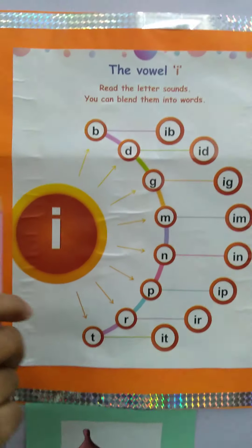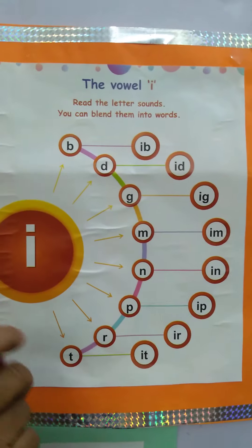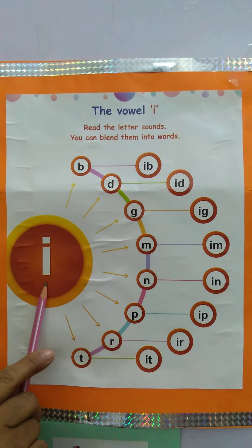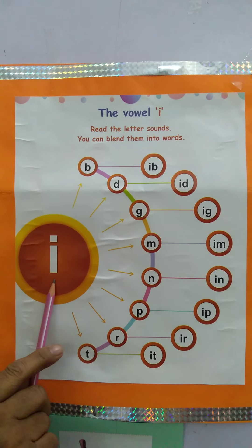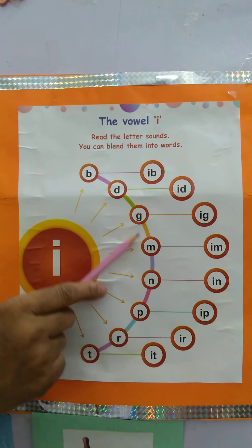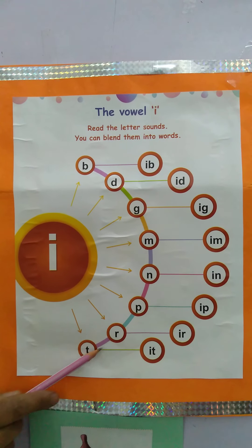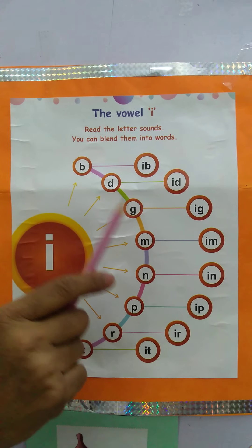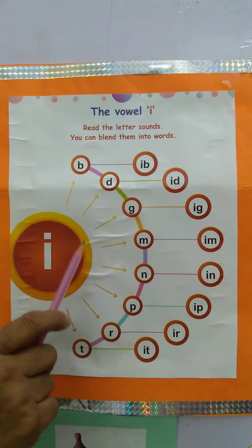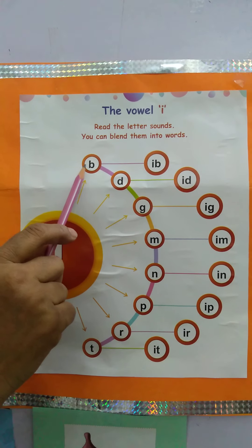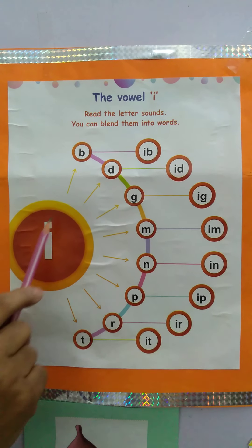Let us read the letter sound. This is vowel I — sound is 'E'. And these are consonants. You can blend them into words. Now let us do: E, B — ib.